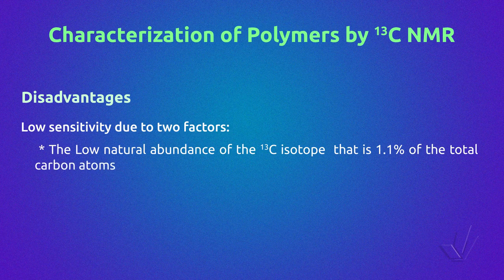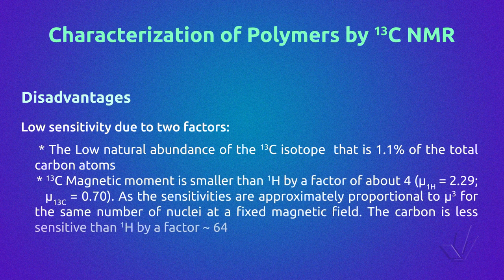Another advantage is that decoupled carbon-13 spectra are simpler due to the absence of coupling. But there are also disadvantages, such as low sensitivity due to two factors: the low natural abundance of the carbon-13 isotope, which is 1.1% of total carbon atoms, and the carbon-13 magnetic moment, which is smaller than proton-1 by a factor of about 4 — the proton magnetic moment being 2.29 and carbon-13 being 0.70 Ergs/Gauss.